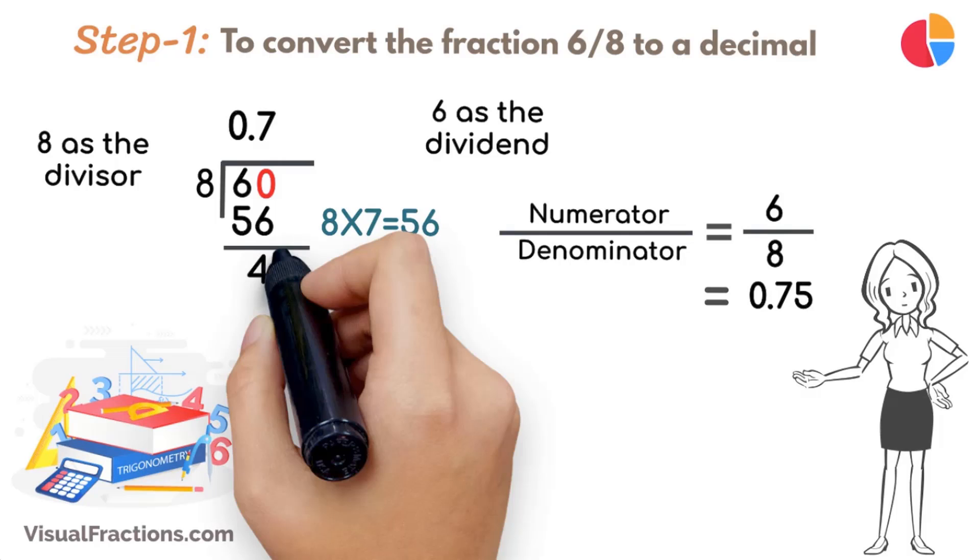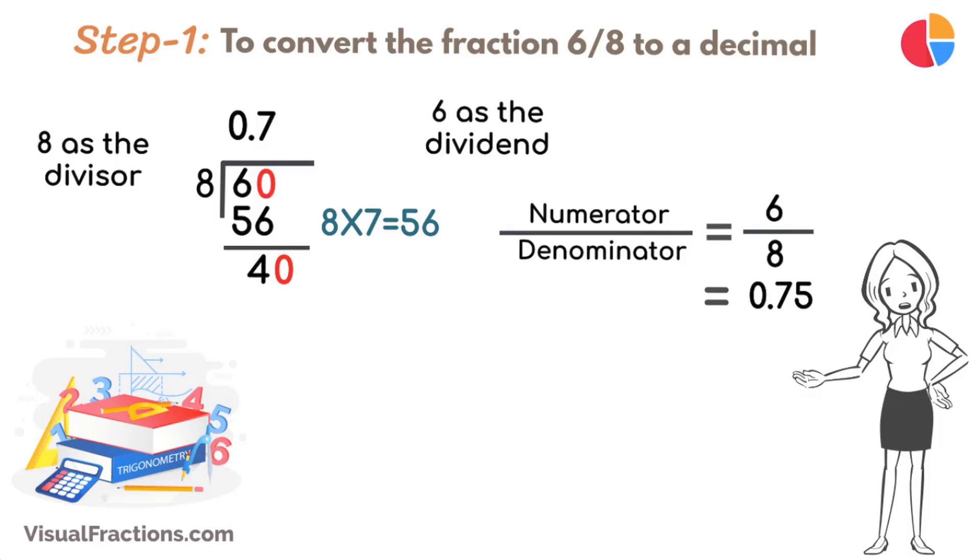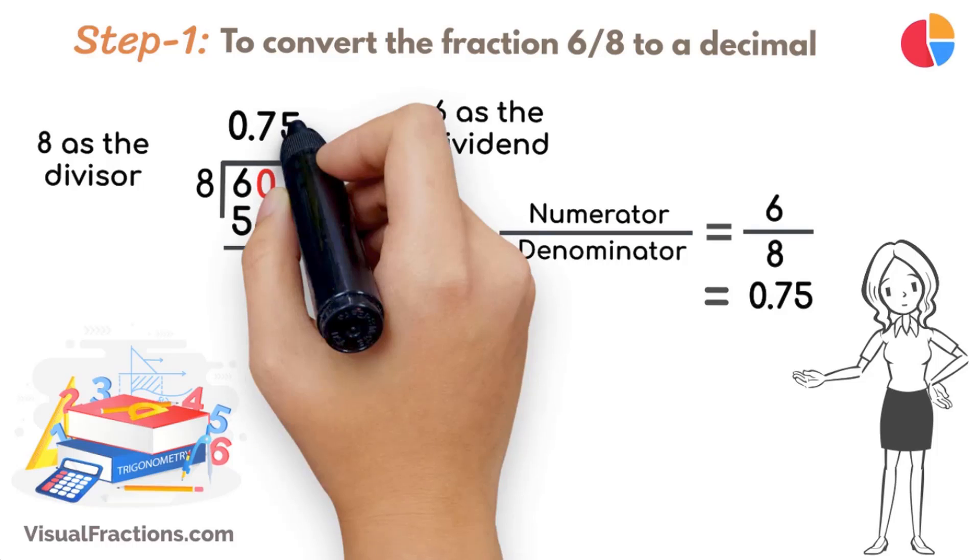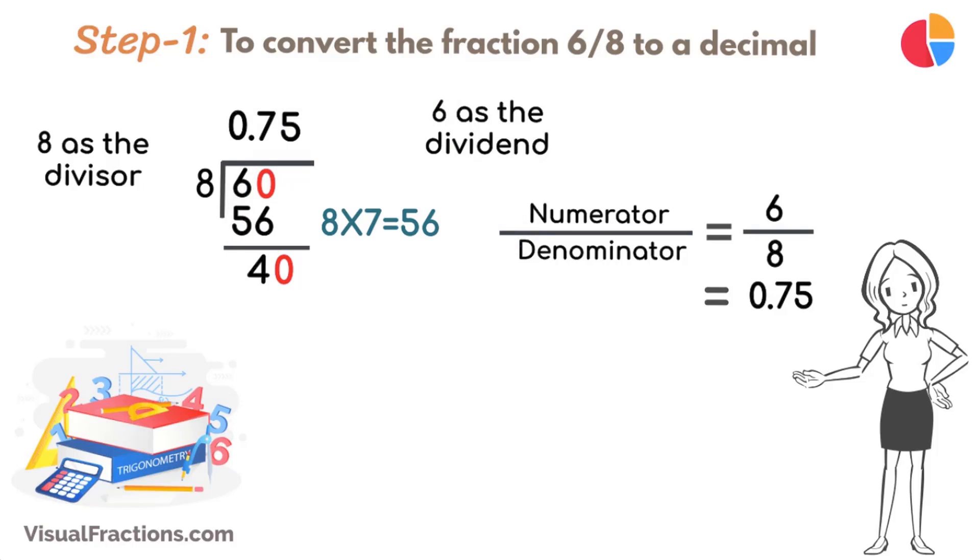Next, bring down another 0 to make it 40. 8 goes into 40, 5 times, updating the quotient to 0.75 exactly. Multiply 8 by 5 to get 40, and subtract this from 40, leaving a remainder of 0.